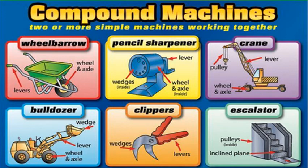What you have to remember is this: if a machine has more than one simple machine, it is going to be a complex machine. It can be much more complex or it can be less complex as well.